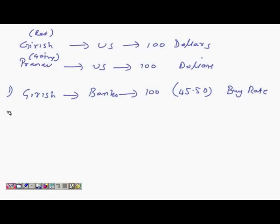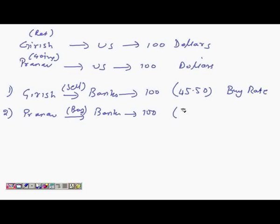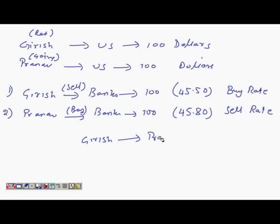Similarly, Pranav goes to a bank to buy $100 and the bank says okay you can buy it at 45.80, which is the sell rate. Now what happens is that Girish and Pranav meet each other somehow, and Girish says okay I have $100, why don't you buy directly from me?